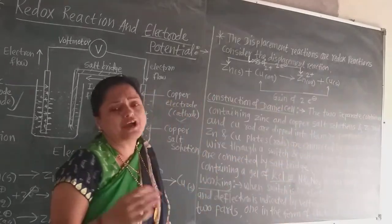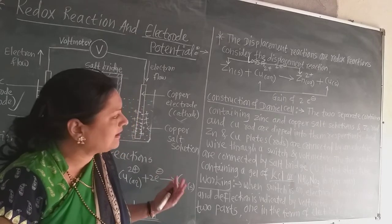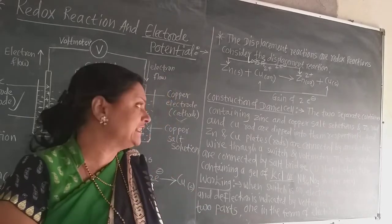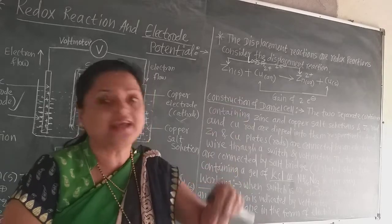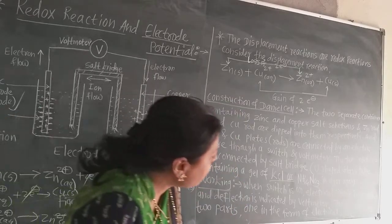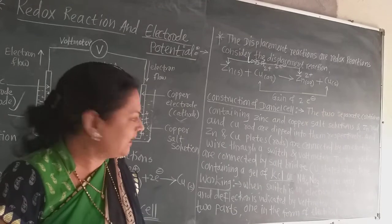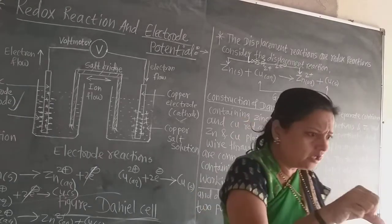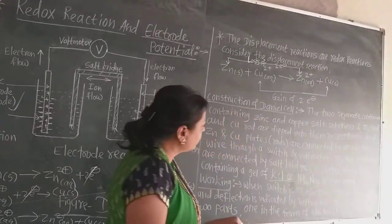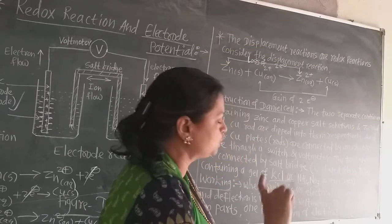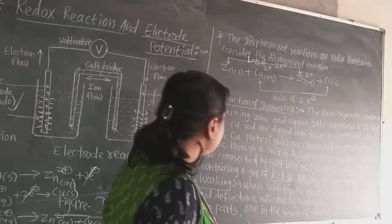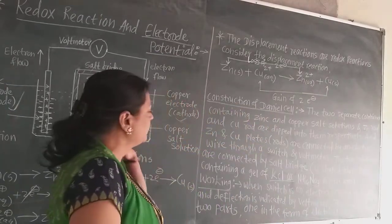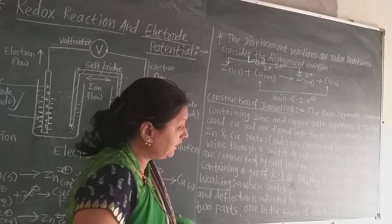In constructing the Daniel cell, you write two separate containers containing zinc and copper salt solutions respectively. Zinc rod is dipped in zinc sulphate solution and copper rod in copper sulphate solution. They are connected by a wire through a switch. The two solutions are connected by a salt bridge, which is an inverted U-shaped tube containing a gel of KCl and NH₄NO₃ in agar-agar.